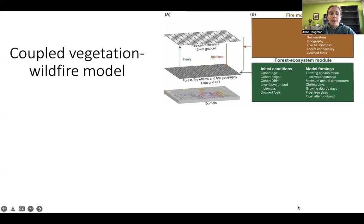And so this is a coupled wildfire vegetation model that my group works with that represents a given forested domain. So for example, we're looking at, in particular, the Sierra Nevada at this point in time. And the fire characteristics are represented on a 12 kilometer grid. And the factors that influence those fire characteristics include things like climate, but there's also a dynamic feedback between the fuels, which is where we get into the vegetation dynamic portion of the model. And that's represented on a one kilometer grid cell.